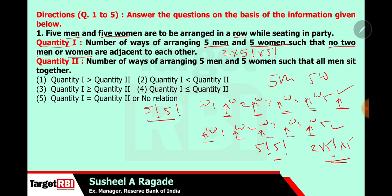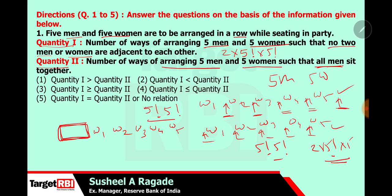Now let us calculate quantity 2. What is given in quantity 2? The number of ways of arranging 5 men and 5 women such that all men sit together. It means we can consider 5 positions for women as W1, W2, W3, W4, W5 and consider one box where all men will be arranged. We keep them in the same box because they have to sit together.